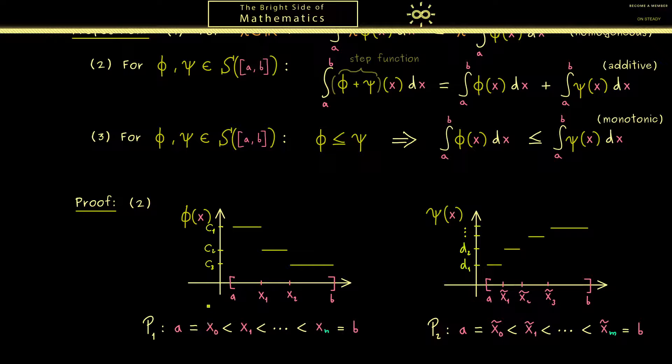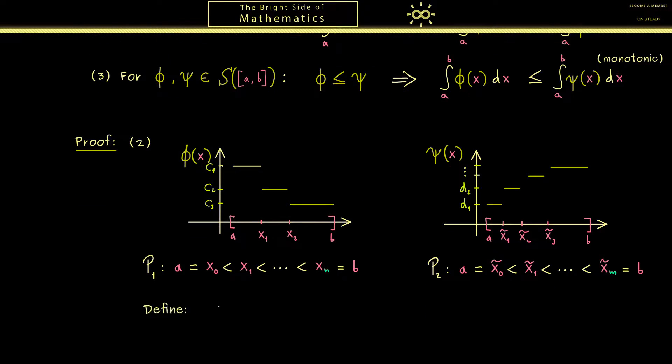So you see with these sketches we have already fixed some notation here. In particular we have a partition p1 that works for phi and a partition p2 that works for psi. Now of course in order to calculate this integral here on the left hand side we need a partition that works for both step functions at the same time. And indeed we've learned in the last video how to do this. We just define p3 as the union of p1 with p2.